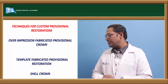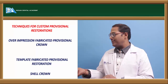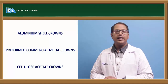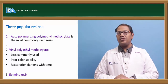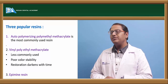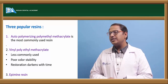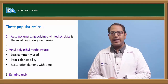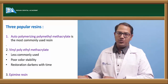Techniques for custom provisional restoration include over-impression fabricated provisional crowns, template-fabricated provisional crowns, shell crowns, aluminum shell crowns, preformed metal crowns commercially available, cellulose acetate crowns, and polycarbonate crowns. Three popular resins used for fabrication of provisional restorations are: first, auto-polymerizing polymethyl methacrylate, which is commonly used — a self-cure acrylic; second, vinyl polyethyl methacrylate, which is less commonly used because its color stability is poor — the restoration darkens with time. Studies show the restoration gets darker, so we need to consider that.